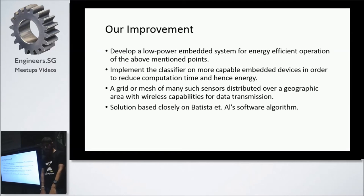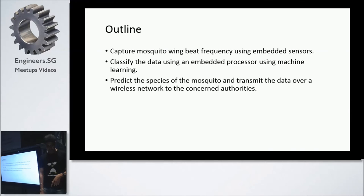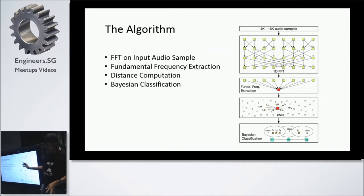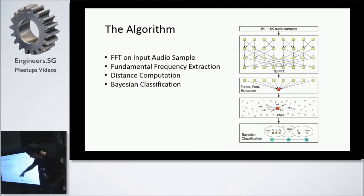The solution is closely based on Batista's algorithm — we didn't modify the algorithm but made many improvements. We capture the wingbeat frequency using the sensor also built by Batista, classify the data using the algorithm, predict the species, and send it over the mesh network. The algorithm takes audio samples, runs FFT to extract the fundamental frequency, computes distances, and runs the Bayesian classifier to determine which class the mosquito belongs to.